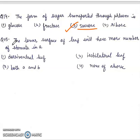Question 15: The lower surface of leaf will have more number of stomata in. First, dorsiventral leaf. Second, isobilateral leaf. Third, both A and B. Fourth, none of these. Right answer will be dorsiventral leaf.